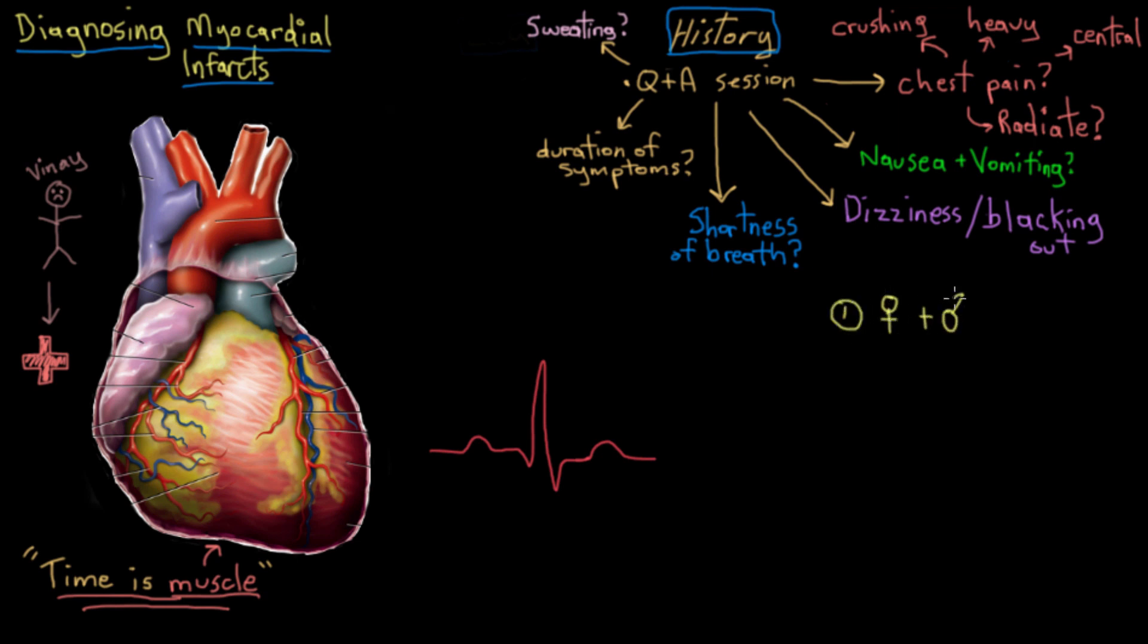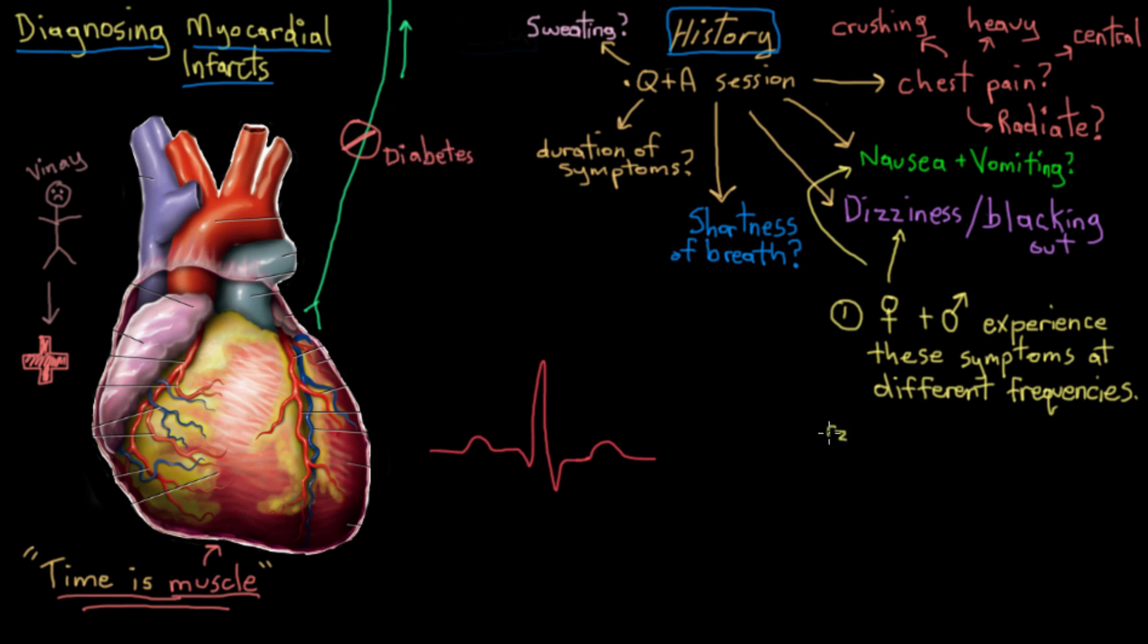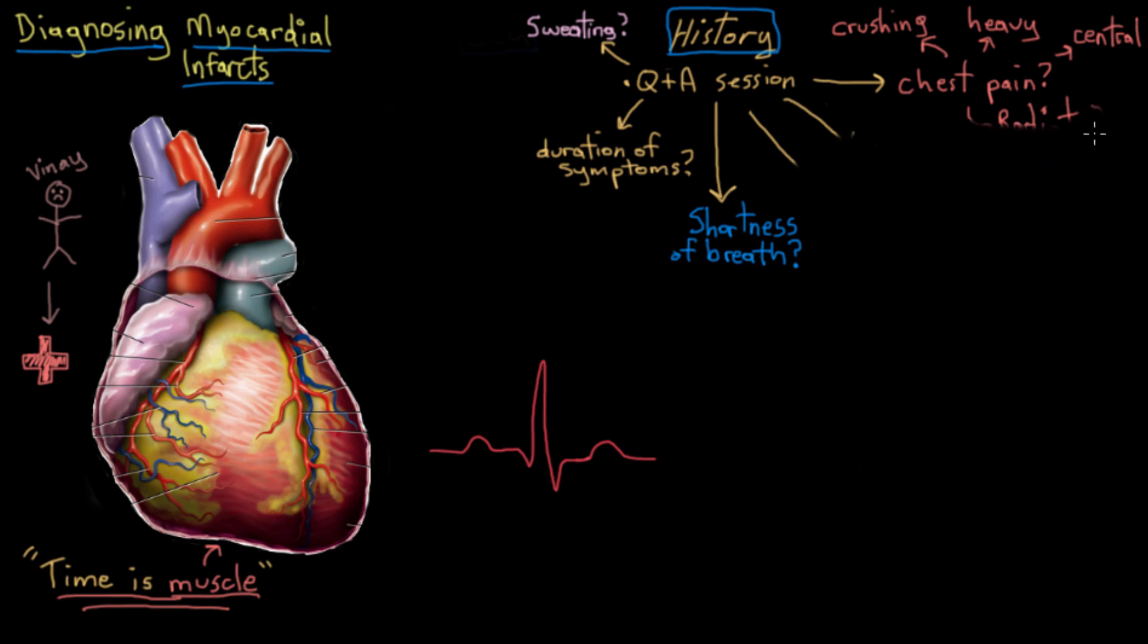Two caveats to talk about. First, both men and women will experience all of these symptoms that I just listed, but statistics actually show that women seem to experience the nausea and vomiting and the dizziness and the blacking out more often than men do. The second caveat is that in people who have diabetes, the nerves that conduct pain from the heart may have become damaged as part of a complication of their diabetes. So sometimes people who have diabetes don't actually get chest pain because they actually can't sense the pain signals coming from their heart, coming from their chest. But these are really some of the key parts of a history that you'd want to ask about in someone who you're suspecting of having a myocardial infarct. We've done history. Now we need to move on to ECG.